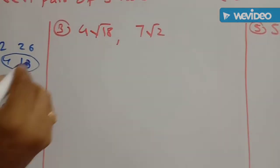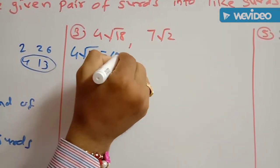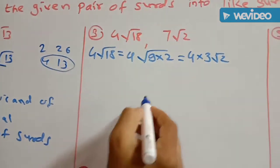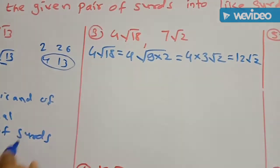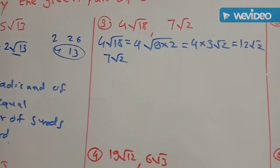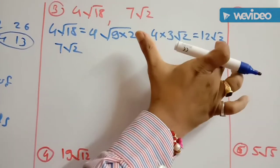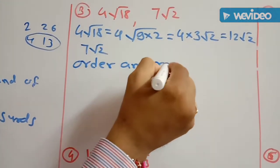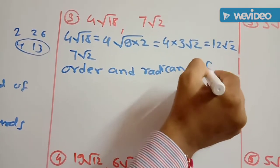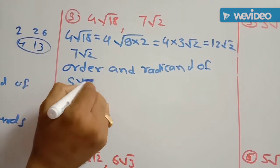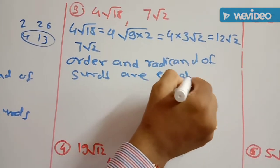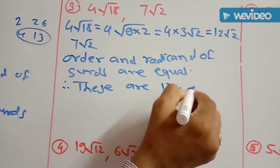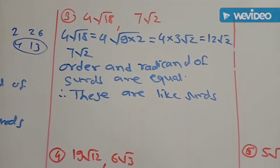Third pair: 4 root of 18 and 7 root of 2. Root of 18 can be written as 4 into 9 into 2. Square root of 9 is 3, so 4 into 3 into root of 2 equals 12 root of 2. The second SIRD is 7 root of 2. Both have the same order and the same radical (root of 2), so these are like SIRDs.